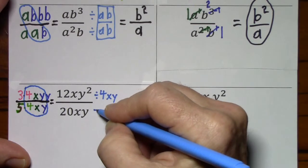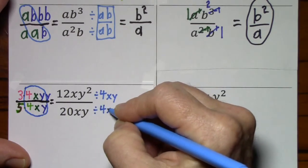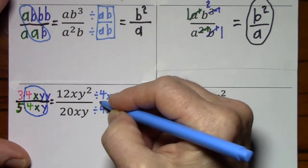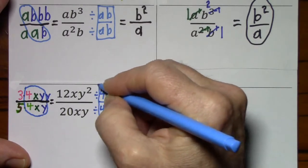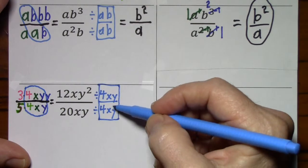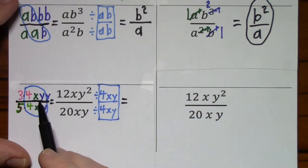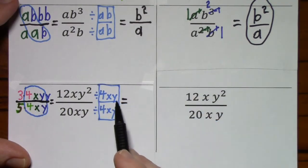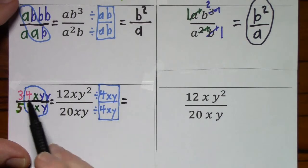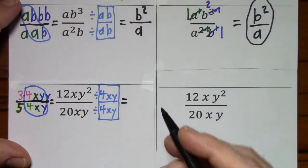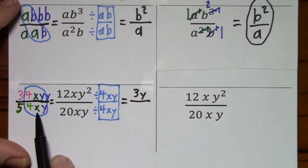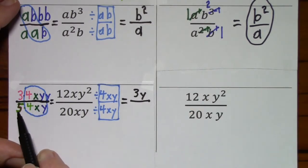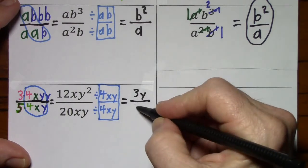So I'll have to do the same to the denominator. And this can be thought of as a strange looking one. 4, x, y is my common factor. I'm going to divide out 4, x, y. So I'll be left with 3y in the numerator. And if I divide out 4, x, y, I'll simply be left with a 5 in the denominator.